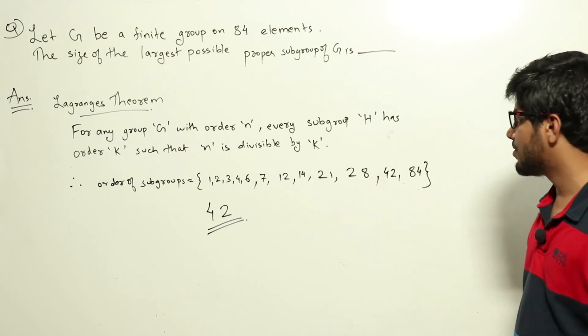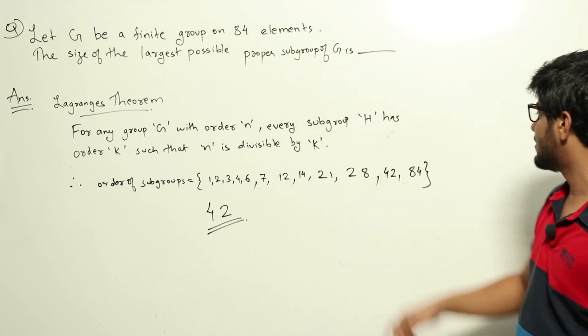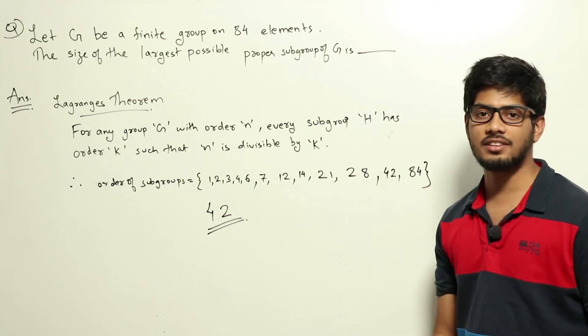These are the factors of 84. In the question, it's clearly given that it's a proper subgroup, so it can't be G itself, meaning it can't be 84. The next largest one is 42, and 42 is the answer.